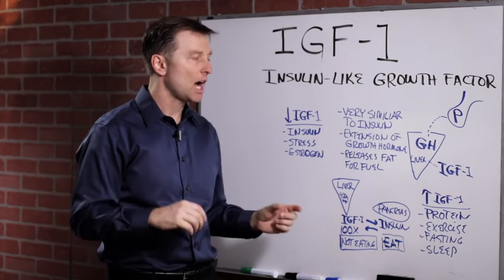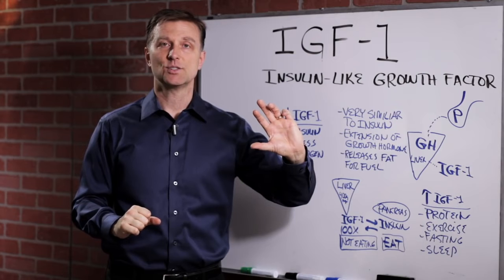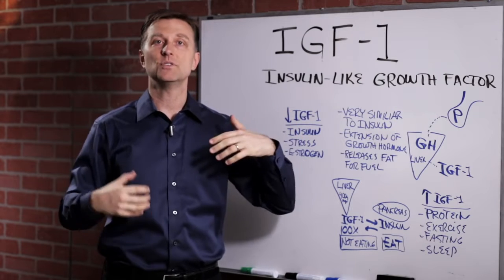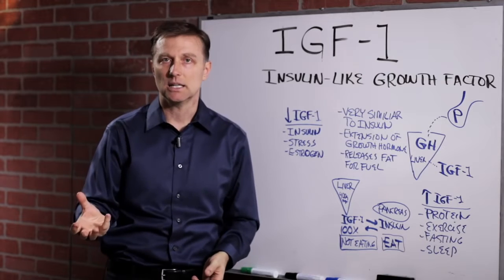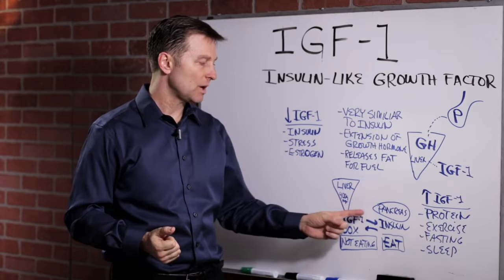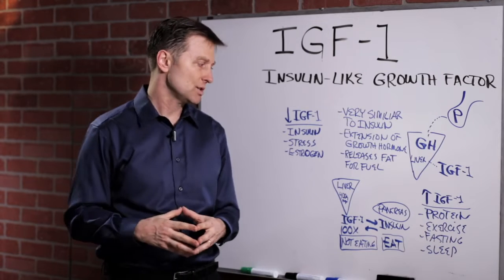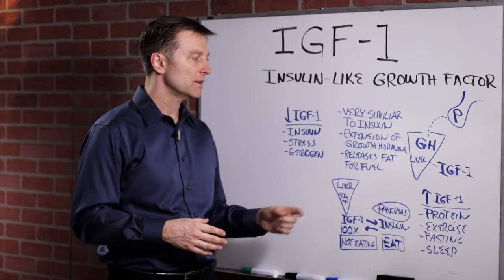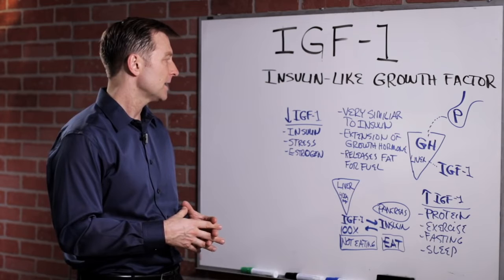But the IGF is 100 times greater than insulin. So for example, over time, if you destroy your liver or the liver gets fatty, you lose the capacity to make IGF, which then forces your body to make more insulin. So that's the diabetic situation. The liver is very vital in protecting you against diabetes.